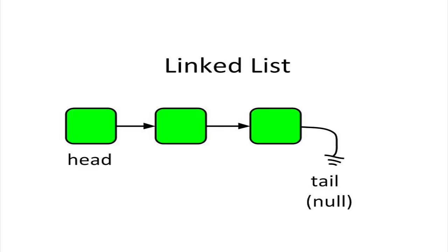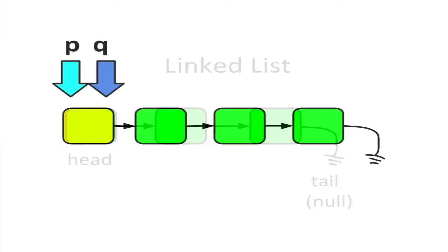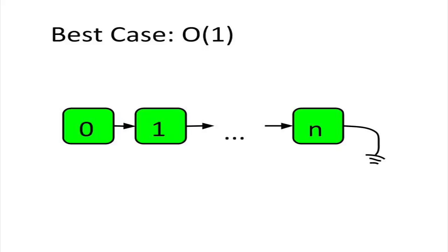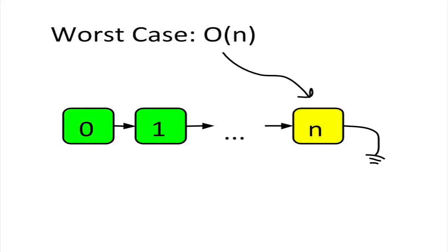Looking up elements in a linked list is a lot less efficient. You can't just directly access any node in the list. Instead, you have to traverse down the list until you find it. If the item you are looking for is at the front of the list, it's an O of 1 operation. If it's at the end, it's an O of N operation, where N is the total number of nodes in the list.